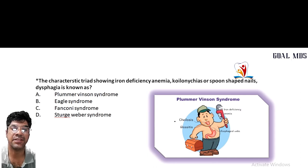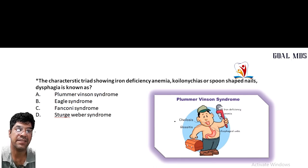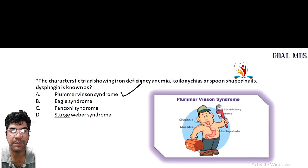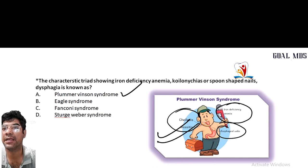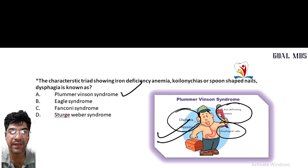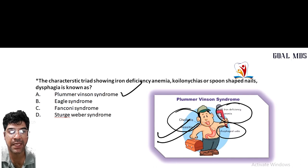Moving to the next question: the characteristic triad showing iron deficiency, koilonychia (spoon-shaped nails), and dysphagia (difficulty in swallowing) is the feature of Plummer-Vinson syndrome. It is a rare syndrome characterized by the triad of iron deficiency anemia, esophageal webs, and atrophic glossitis. It is often associated with iron deficiency anemia leading to symptoms like spoon-shaped nails.